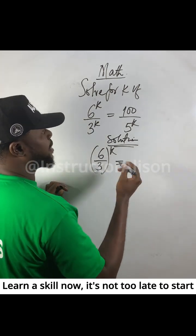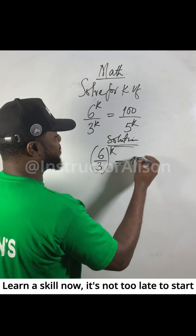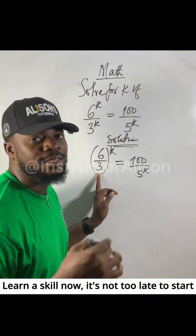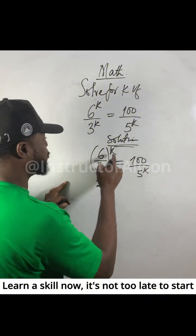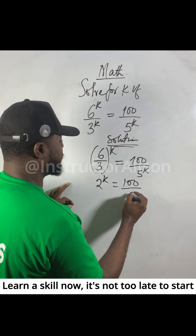So we get 2 to the power of k equals 100 divided by 5 to the power of k. Six divided by three is two, so we have 2^k equals 100 over 5^k.